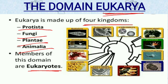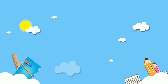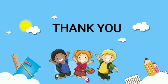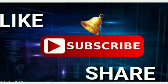Overall, we have studied the three domains of life: Eukarya, Archaea, and Bacteria — the six kingdom classification given by Carl Woese. Thank you, and don't forget to like, share, and subscribe.